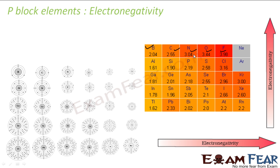Electronegativity is the tendency to attract electrons. If an atom is smaller in size and has more positive charge in the nucleus, it can attract electrons more strongly. Fluorine can attract electrons well because it is small and highly positively charged. Boron, being larger and with less nuclear charge, cannot attract electrons as easily — even at the same distance, it won't pull the electron as effectively.